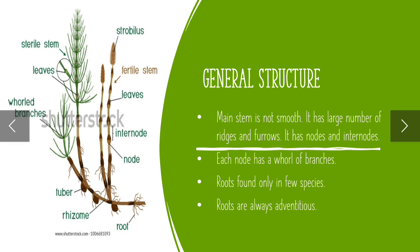General structure: the main stem is not smooth — it has a large number of ridges and furrows. It has nodes and internodes. Each node has a whorl of branches. Roots are found only in a few species and are always adventitious. You can see here the diagram of Phenopsida.